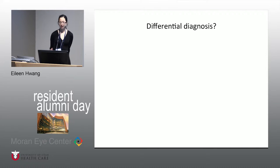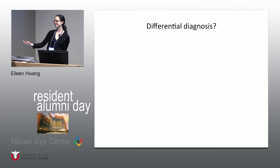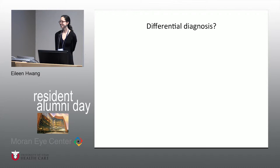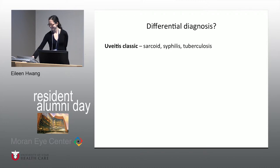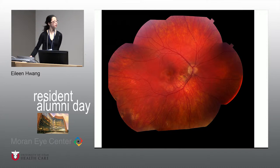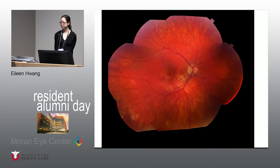I'd like to ask the residents — or Dr. Hoffman or Dr. Zogg — for a differential diagnosis. It looks almost like a serpiginous pattern coming off the nerve in one eye, and it's also kind of a geographic lesion. There are a lot of peripheral lesions too.